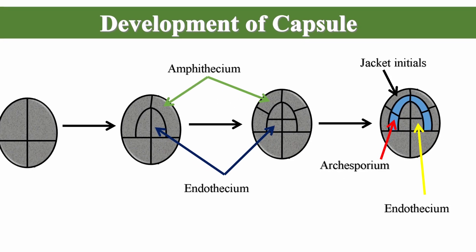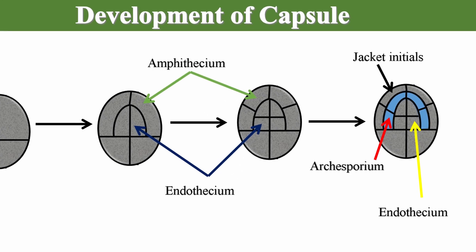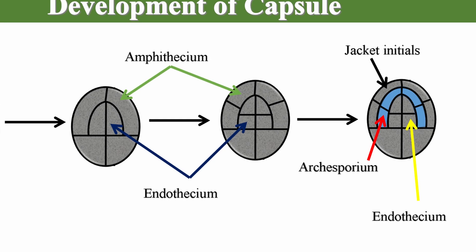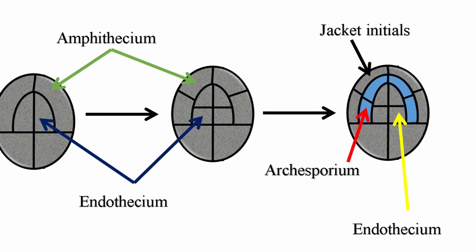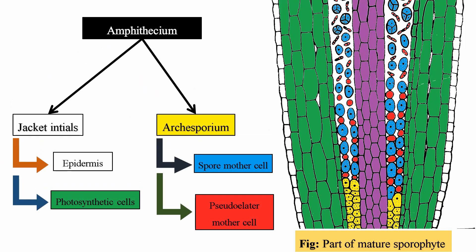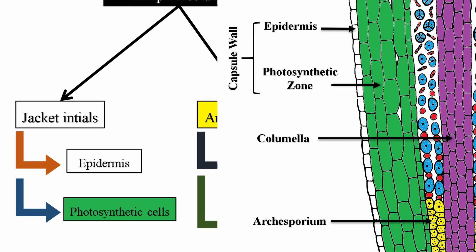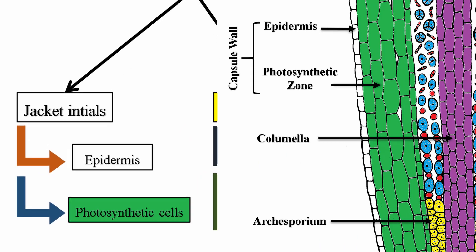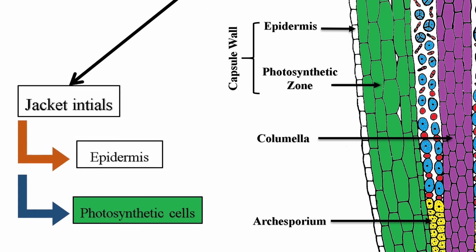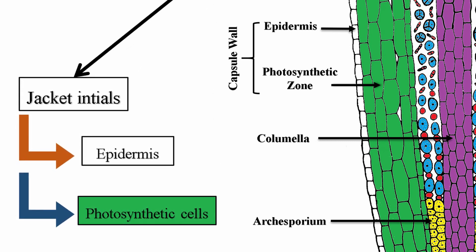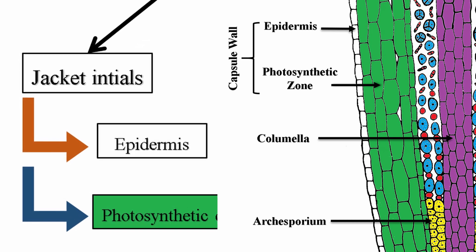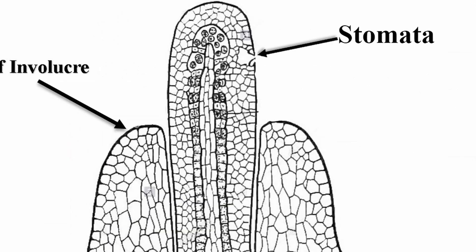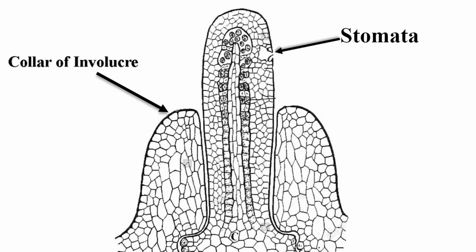The cells of the amphithecium soon divide periclinally to form an outer sterile layer of jacket initials and inner fertile layer of sporogenous cells, known as the archesporium. The jacket initials layer divide by periclinal walls to form capsule wall, which is four to six layers thick. The outermost cutinized layer of the capsule wall is known as epidermis, which also develops the stomata at various places. The cells within the epidermis are photosynthetic, which enclose intercellular spaces. The photosynthetic tissue communicates with the exterior through the stomata.